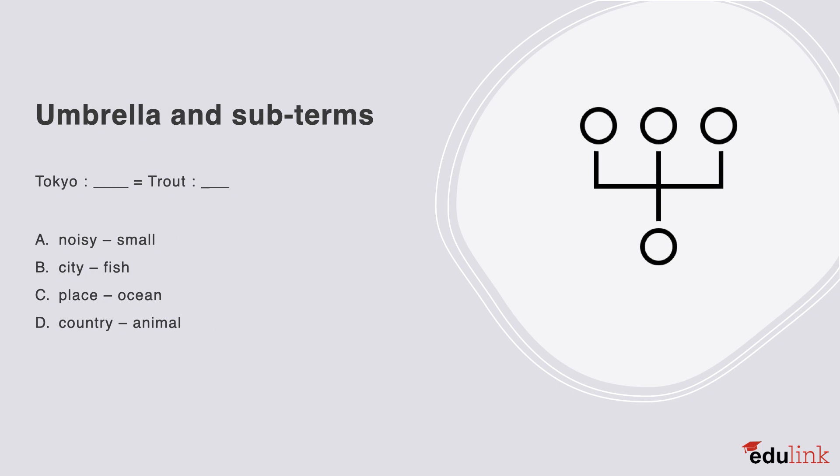The next question relates to umbrella and subterms. Consider the following options carefully. The correct answer is B. Tokyo is a city, and trout is a type of fish. So Tokyo and trout are the subterms for the umbrella terms city and fish.